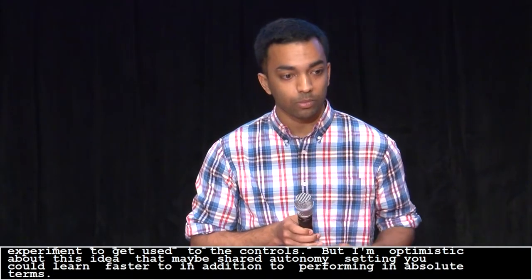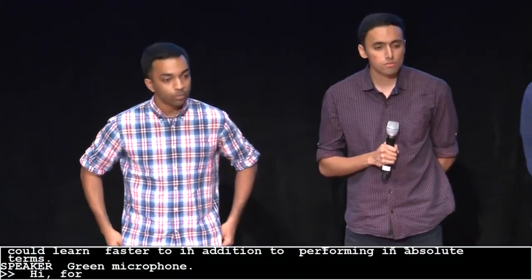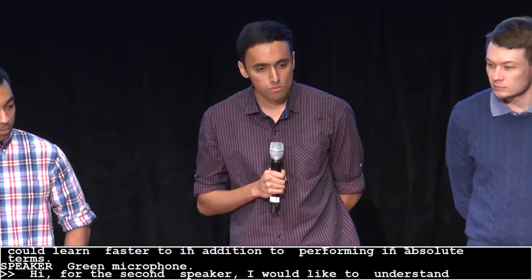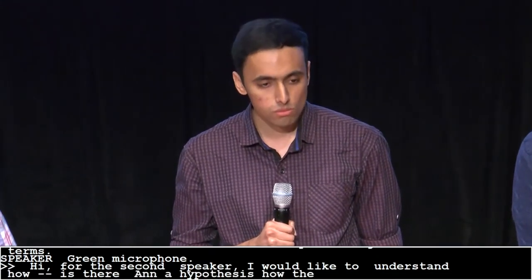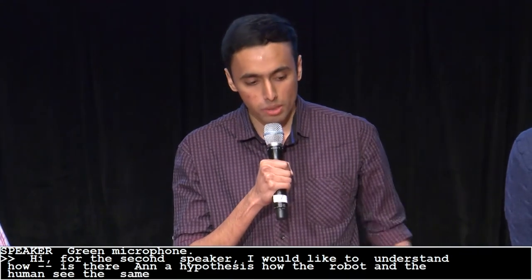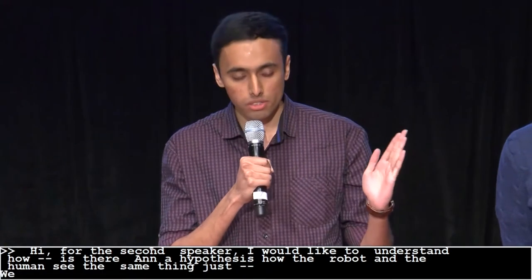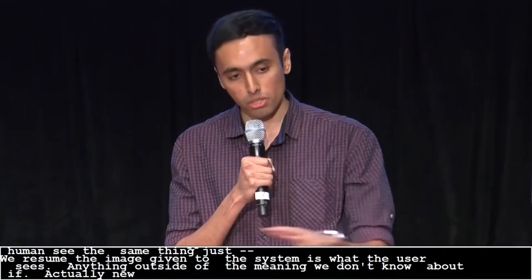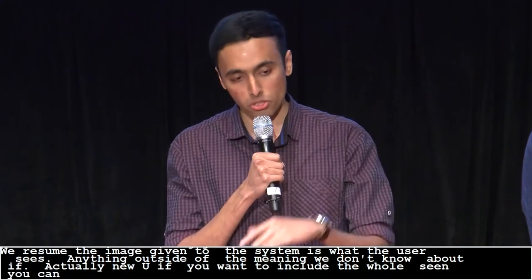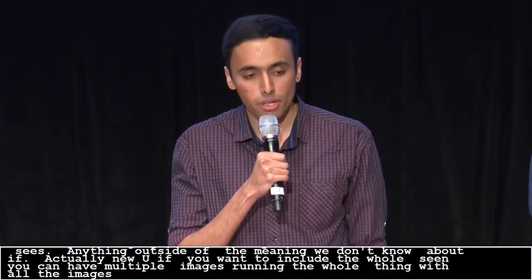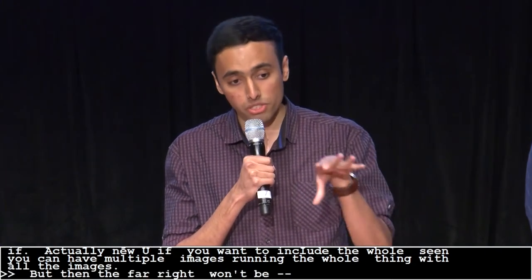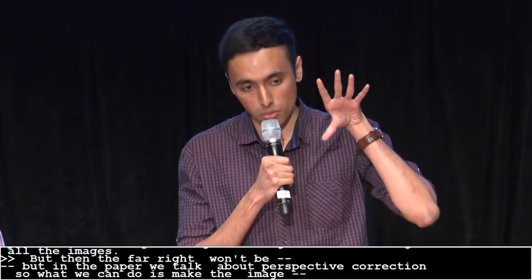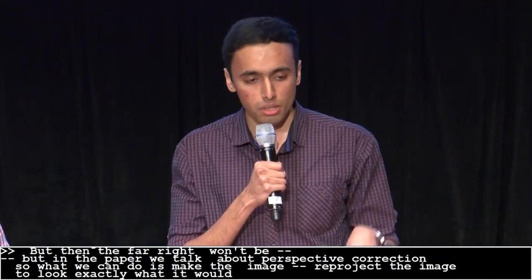Green microphone. Hi, for the second speaker. I would like to understand, is there a hypothesis on the fact that the human and the robot see the same thing? That's right. We assume the image given to the system is what the user sees. Anything outside the image, we don't know about it. But actually, if you want to include the whole scene, you could just have multiple images. And you could do the same thing, or you do some image stitching, or you just run the whole thing with all the images. Yeah, but then the far right will not be? It won't be far right. But in the paper, we talk about perspective correction. So what we do is we can make the image, we can re-project the image so that it looks exactly like what it would look for the person. But obviously, there's a problem with occlusion and everything. But it's definitely possible.